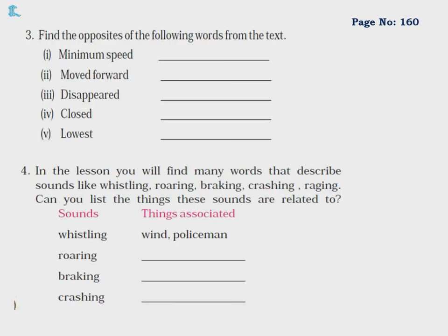Find the opposites of the following words from the text: minimum — maximum speed; moved forward — reversed or backward; disappeared — appeared; closed — opened; lowest — highest. In the lesson you will also find many words that describe sounds like whistling, roaring, braking, crashing, raging. List the things these sounds are related to — whistling relates to wind or a policeman, roaring relates to a lion or tiger, braking relates to a bike or car, crashing relates to waves or a storm.